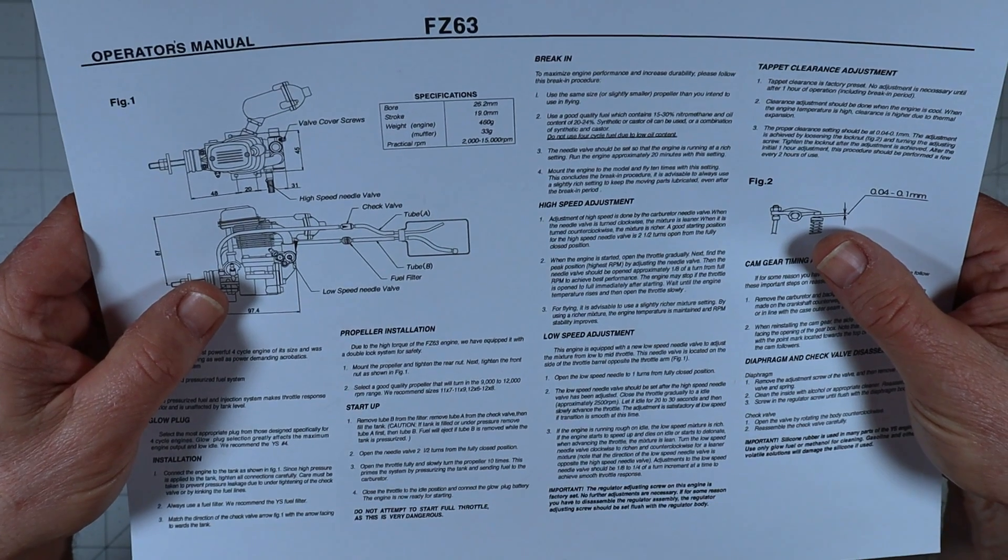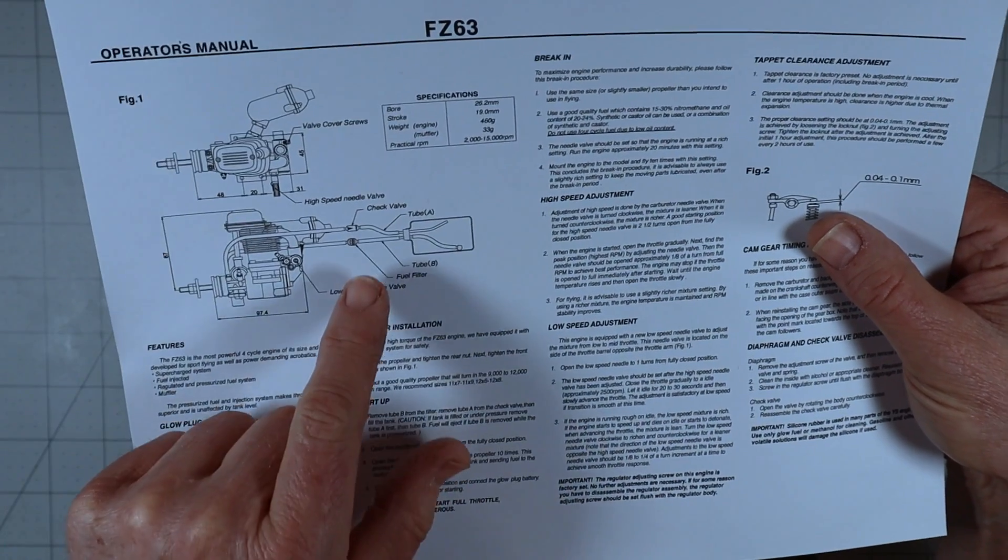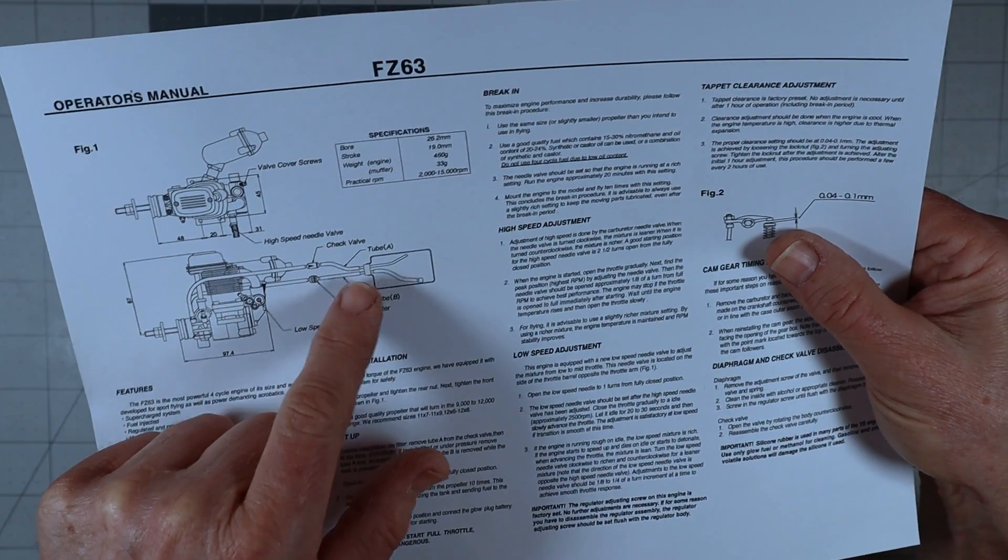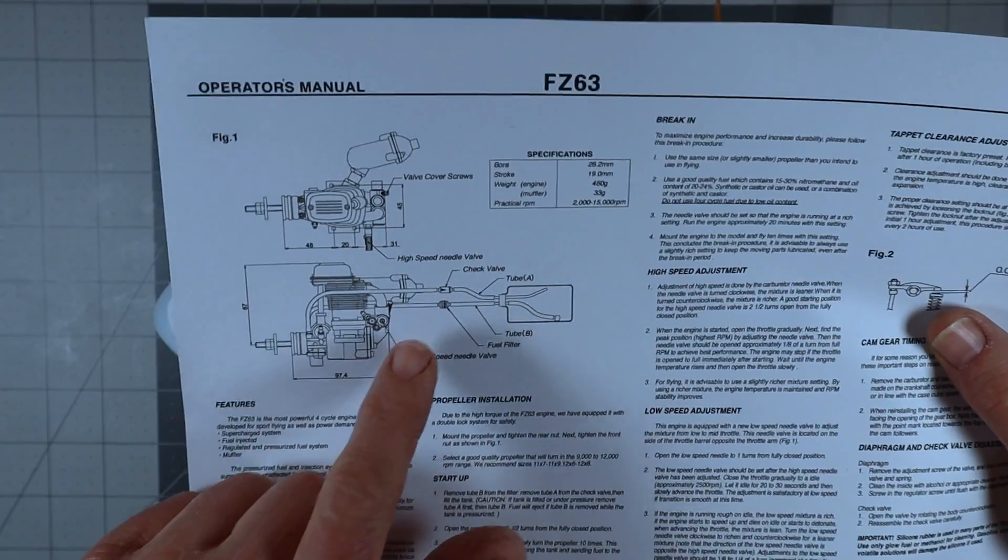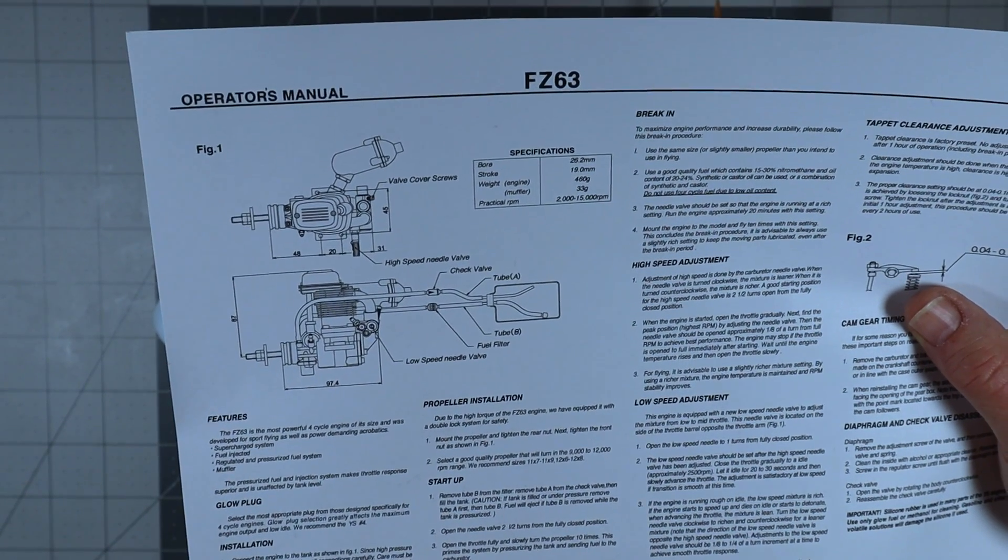If the tank is filled or under pressure, remove tube A first, which A would be the vent line. They're saying A would be the vent line. Does that make sense to me? Yeah, I guess that means that they probably wouldn't squirt fuel out.